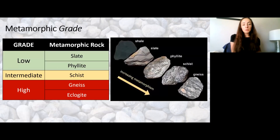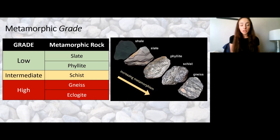So let's talk about grade. Metamorphic grade is a measure of increasing metamorphism — whether it be increasing in intensity or duration, this will cause different products to form because those minerals have more time to alter. Low-grade metamorphism typically forms products like slate and phyllite, whereas intermediate to high metamorphism forms schist, and high-grade metamorphism is typical of gneiss and eclogite products.